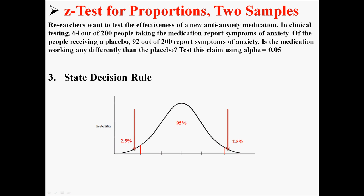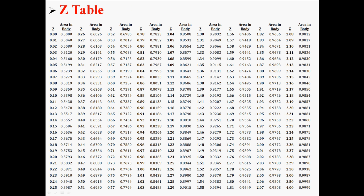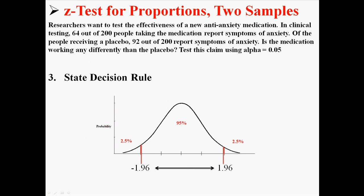Next, the decision rule. If we're using an alpha of .05, that means 5% is split up into two different tails — 2.5% and 2.5%. That's important, because when I look up the Z-table to find my critical value, if there's 2.5% in one tail, there's 97.5% in the body. Using the table, when the area in the body is 97.5%, the Z score is 1.96. That's where I get my critical value of 1.96.